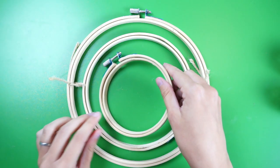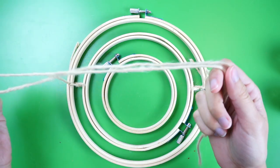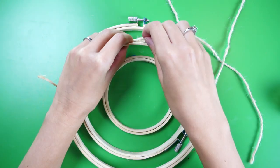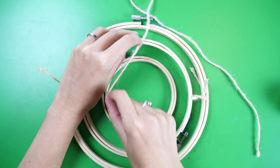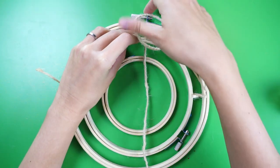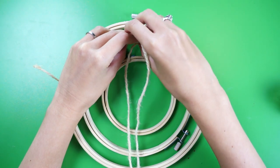Next we'll be attaching the smallest hoop to the middle hoop. You'll need a longer piece of twine this time. Thread the twine between the two pieces of the middle hoop at the 12 o'clock position and pull it through until the ends are even.